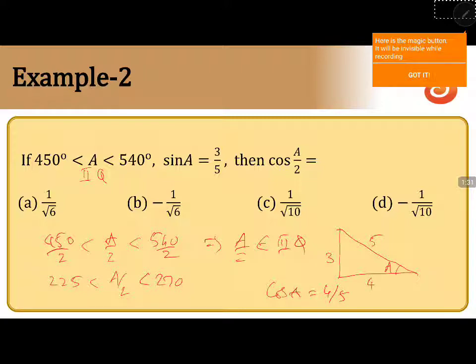Now let us calculate cos a/2. Cos square a/2 is equal to 1 plus cos a over 2. But a belongs to second quadrant, that gives us cos a is minus 4/5 because it is negative.